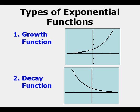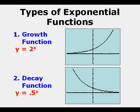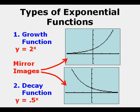In one case, we have the function y equals 2 to the power of x. And in the decay function, we have y equals 0.5 to the power of x. These two functions happen to be mirror images of one another.